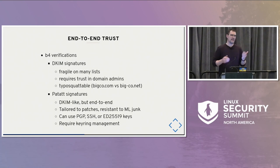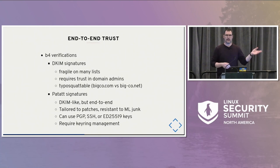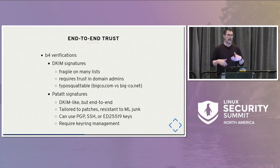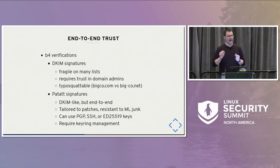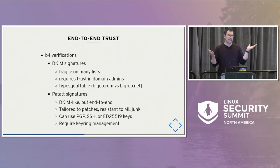DKIM signatures are actually super fragile on mailing lists. We're having a long conversation about some mailing list implementations literally going out of their way to break DKIM. It requires trusting domain admins — if I'm an admin of kernel.org, I can modify any email passing through my email server, and DKIM keys are not usually well-protected since they're readable by the SMTP process. Most notably, it's typosquattable: redhat.com versus red-hat.net, for example. Seeing a DKIM checkmark doesn't mean much unless you verify the domain matches.